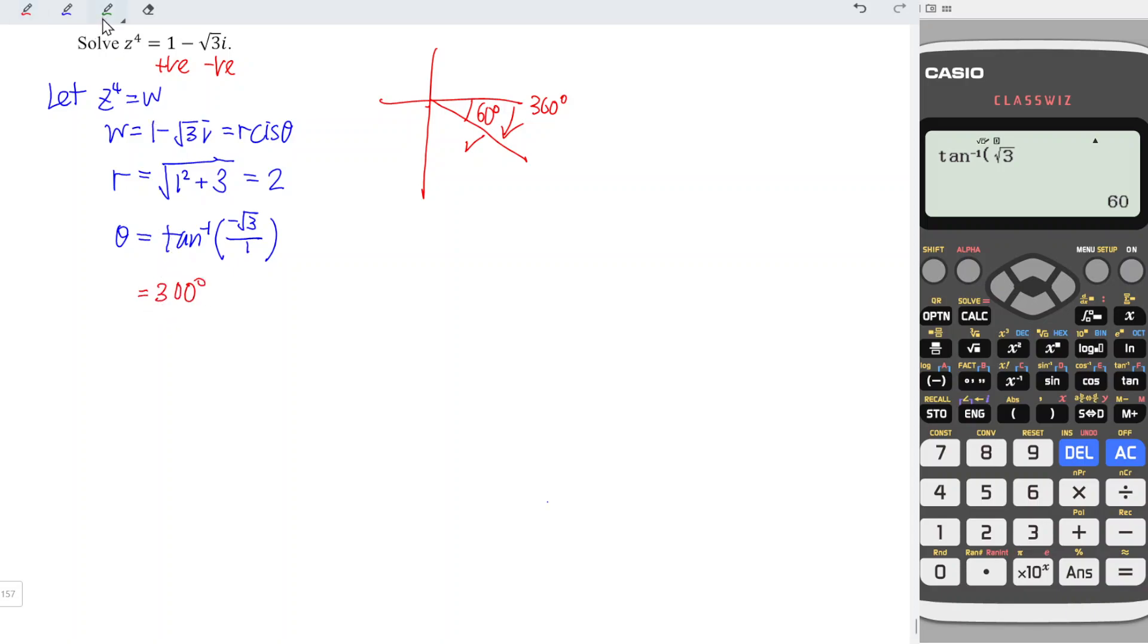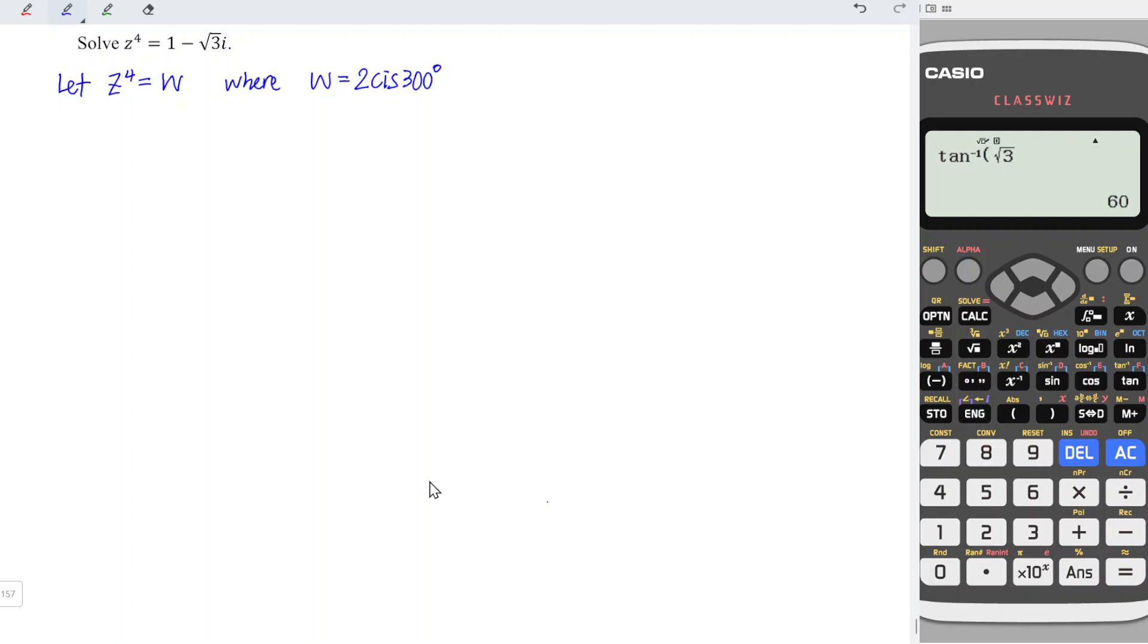And now we can conclude that w is equal to 2 cis 300 degrees. Since z to the power of 4 is equal to w, and w is equal to 2 cis 300 degrees, which means that z is equal to 2 cis 300 degrees to the power of 1 over 4. By using De Moivre's law, we know that we should have 4 roots.